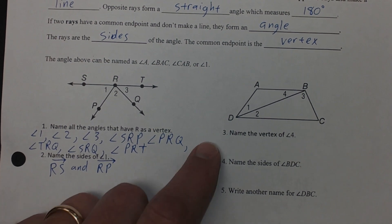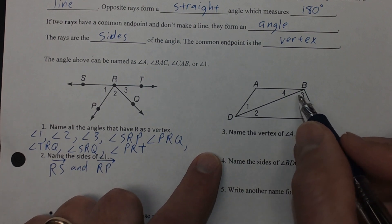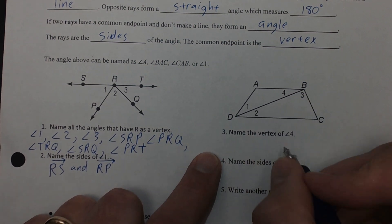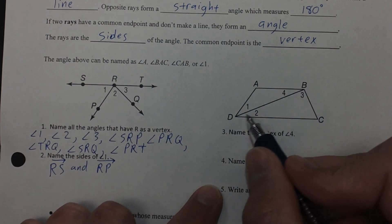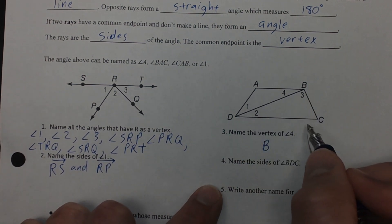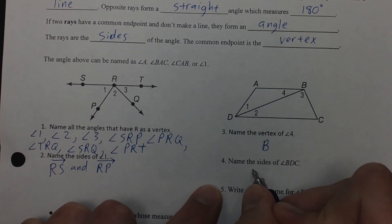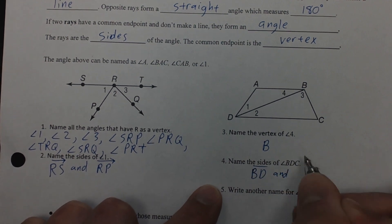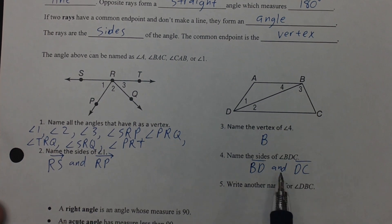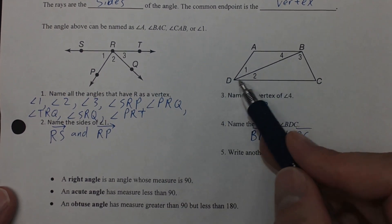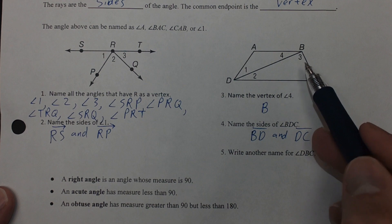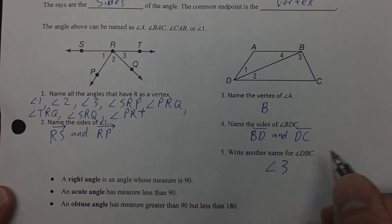Continuing on to number 3: name the vertex of angle 4. Angle 4 is right here, so the vertex would be right at point B. Name the sides of angle BDC, which is another name for angle 2. These are segments this time, so we could say segment BD and segment DC — those are the two segments which form the sides of that angle. And another name for angle DBC is angle 3.